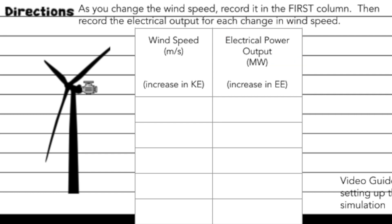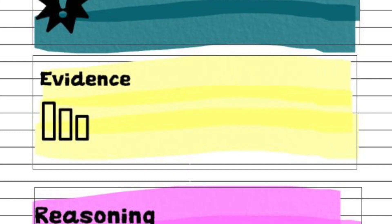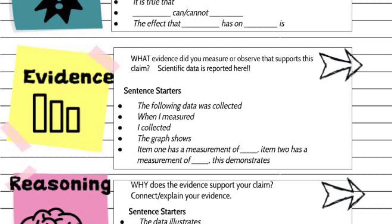And if we put that in terms that fit our claim, we can see that if we increase the kinetic energy, the wind, we saw an increase in electrical energy, electrical power. You'll need to report all of this evidence in the evidence section on your page. Make sure you report your evidence in full sentences and use some of these sentence starters to help you make your sentences flow.